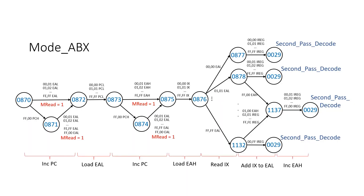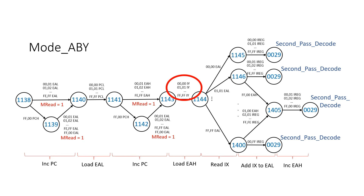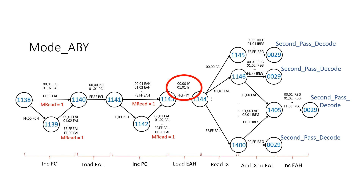Many of the instructions that use absolute X addressing mode also use absolute Y. These instructions have their own opcodes so they have extra entries into rule 28, but the machines for absolute X and absolute Y are almost identical. The only difference is at rules 875 and 1143, where we just swap IX for IY. So once absolute X addressing mode was working, getting absolute Y to work was pretty straightforward.